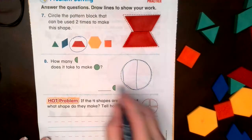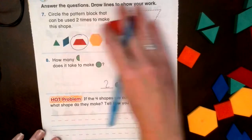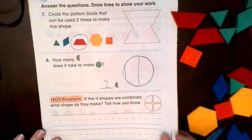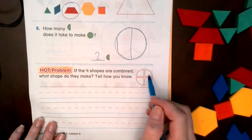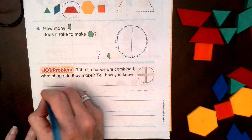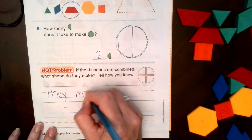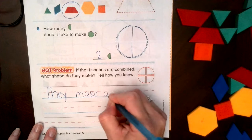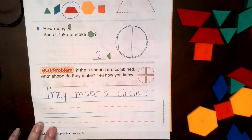We need two half circles in the four if the four shapes are combined.